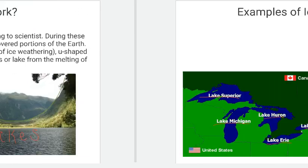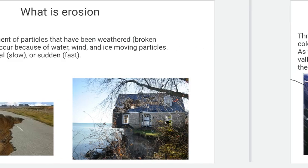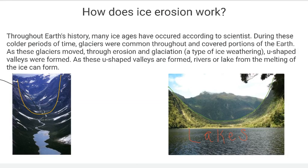In summary, erosion is the process of the movement of particles that have been weathered or broken down. Throughout history, ice erosion has occurred over hundreds of thousands of years, mainly through glaciation and glaciers during the several ice ages that have occurred on Earth. Through glaciation — a type of ice weathering — and the movement of glaciers, things such as U-shaped valleys and lakes, like the Great Lakes in the northern United States and southern Canada, and parts of Yosemite National Park, are formed. I hope this helps, and I can't wait to see you guys in the next video. Bye, everyone.